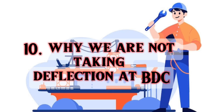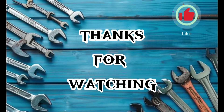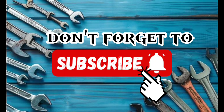Tenth question: Why are we not taking deflection at BDC? At the BDC position, it is not possible to take crankshaft deflection as the connecting rod will hinder in between. Hence, we take readings on two more sites — one at BDC port and another at BDC starboard. We can use the formula: BDC equals port BDC plus starboard BDC divided by two, to find the BDC value. For more videos, don't forget to subscribe.